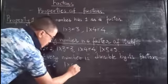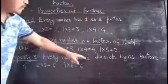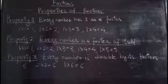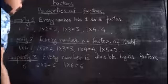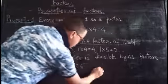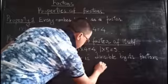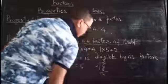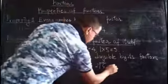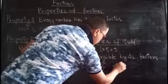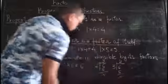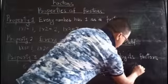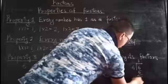One times six is six. So the factors of six are one, two, three, and six. Every number is divisible by each of its factors with no remainder. If you divide six by two, you get three — no remainder. If you divide six by three, you get two — no remainder.